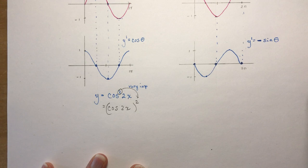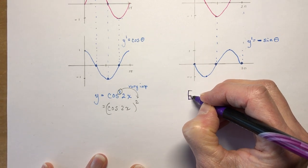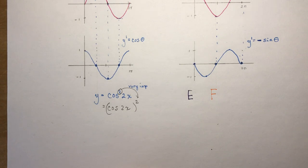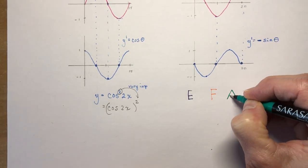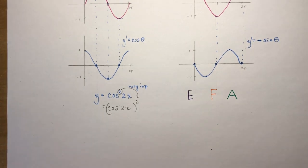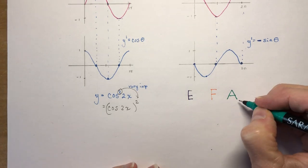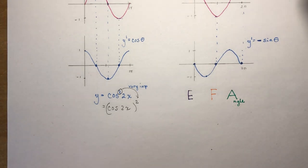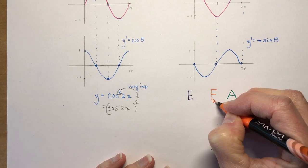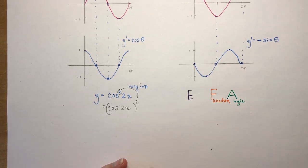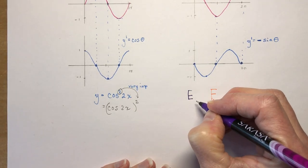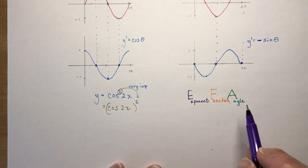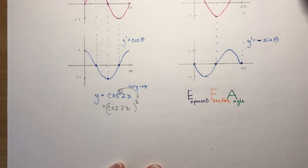So I want to take the derivative of y equals cos squared 2x. What I'm going to tell you is something that you need to remember - EFA. E-F-A. Can you guess what these stand for? A is angle, F is function, and E stands for exponent. I taught my students to say EFA - if EFA you forget, Miss Havert will be mad at you.